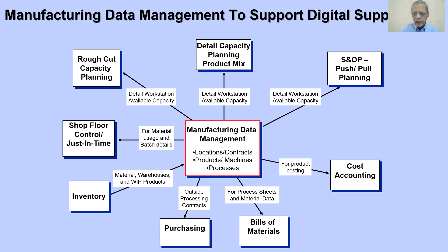In sales and operations planning there is a push plan and a pull plan. A push plan means you are processing the product in a batch in a forward way — for example, in tablet manufacturing it goes mixing, tableting, packing, and distribution. A pull plan means you need to deliver a tablet batch on a specific date, and you plan backwards from that date depending on your stages of manufacturing, lead time, and manufacturing time.